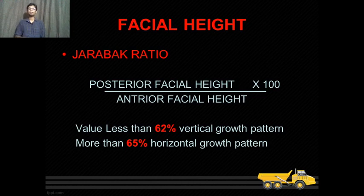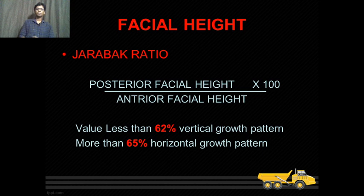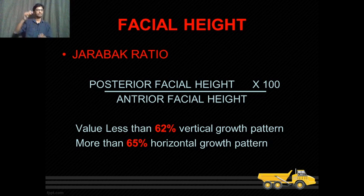The Jarabic ratio is also very important. It is calculated as: posterior facial height multiplied by 100, divided by anterior facial height, giving a percentage. If the value is less than 62%, the patient has a vertical growth pattern. If it is more than 65%, it shows a horizontal growth pattern.